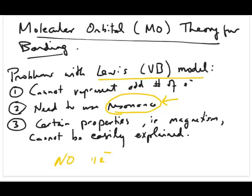Now, the third issue is that there are certain properties in molecules, for example, one that we're going to talk about to some extent is magnetism, that can't be easily explained if you're just to use the Lewis model for bonding. So this is why we need to come up with the second model of bonding, which is the MO model.